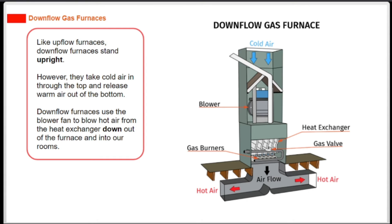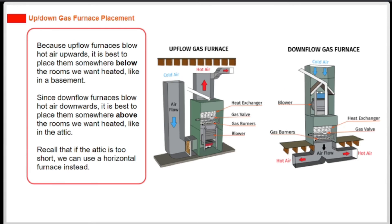Because upflow furnaces blow hot air upwards, it is best to place them somewhere below the rooms we want heated, like in a basement. Since downflow furnaces blow hot air downwards, it is best to place them somewhere above the rooms we want heated, like in the attic. Recall that if the attic is too short, we can use a horizontal furnace instead.